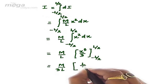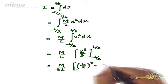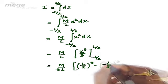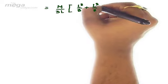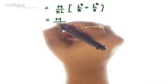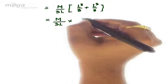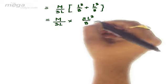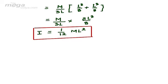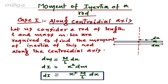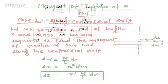Putting in the limits, it will be equal to l by 2 whole cube minus minus l by 2 whole cube, which will be equal to l cube upon 8 plus l cube upon 8, which gives m upon 3l multiplied by 2l cube upon 8, which will be equal to 1 upon 12 ml squared. As we have calculated the moment of inertia of a rod along the centroidal axis, similarly we can calculate the moment of inertia along other axes.